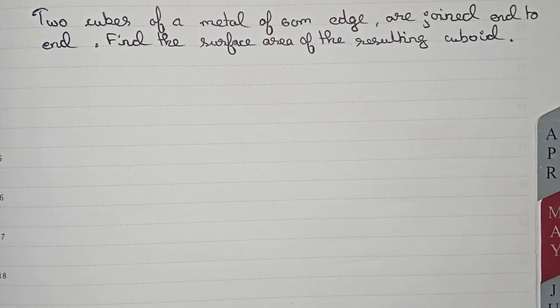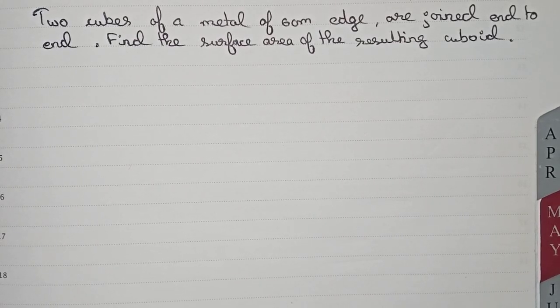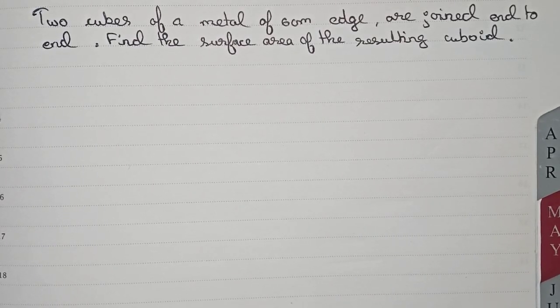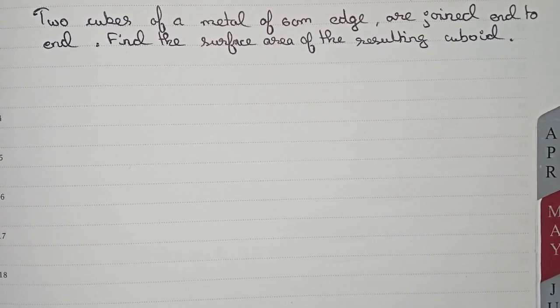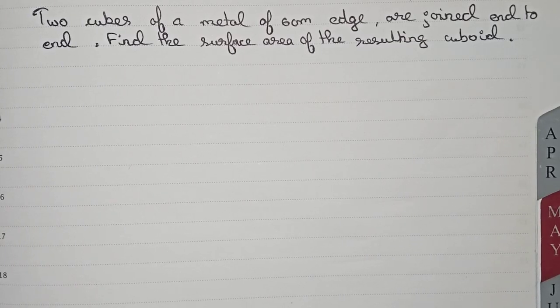Hello guys, welcome to this video. The question is: two cubes of a metal of six centimeter edge are joined end to end. Find the surface area of the resulting cuboid.